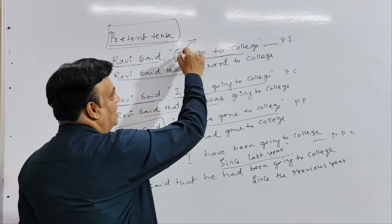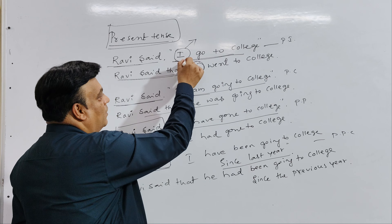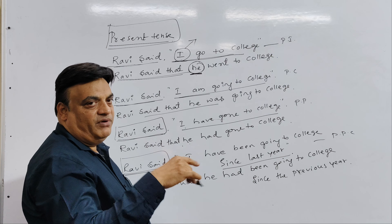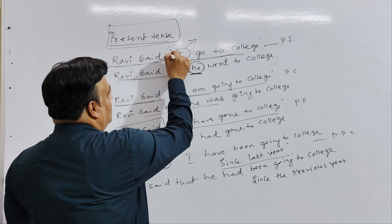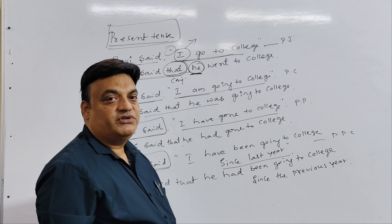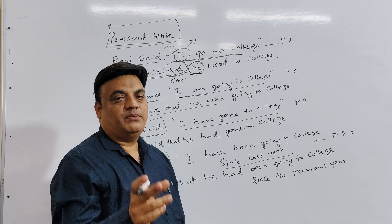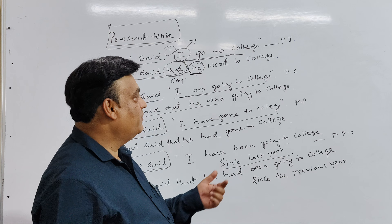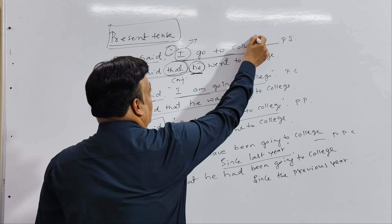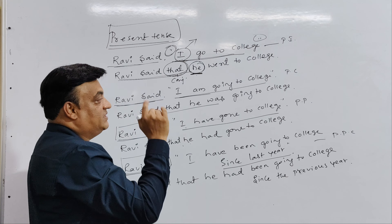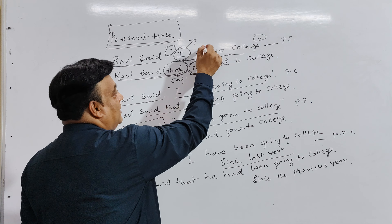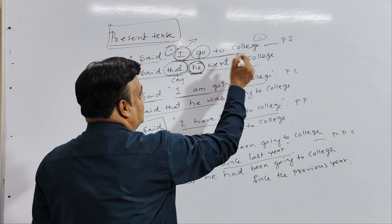We use the conjunction 'that' to join two separate sentences. Change 'I' to 'he/she/it/they' for third person, and change the present tense verb into past tense.